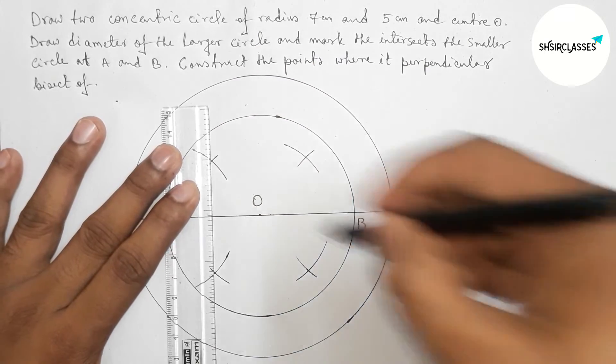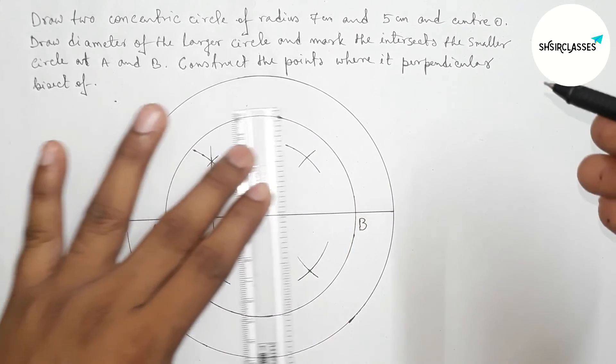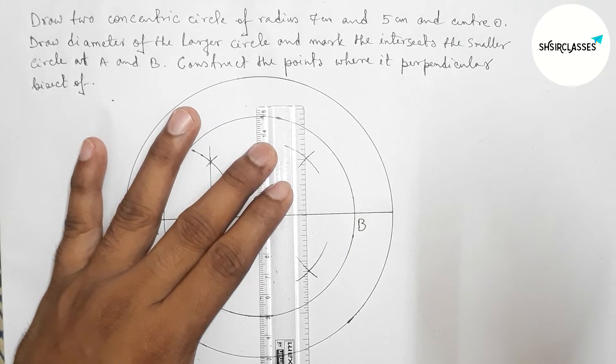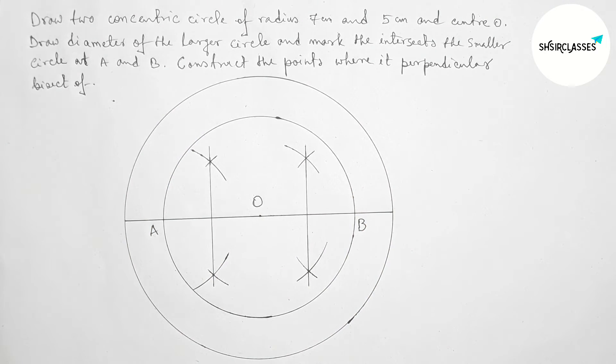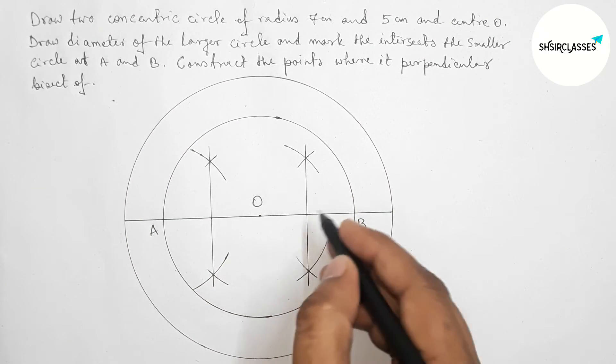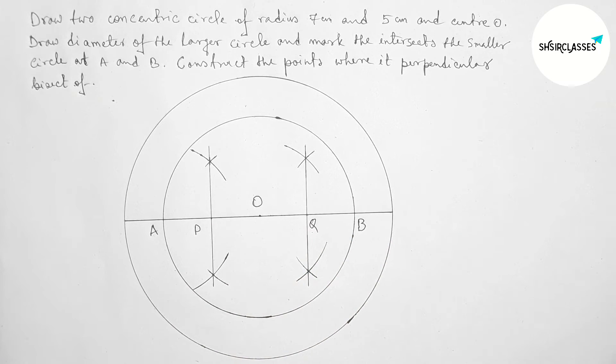Now joining this perpendicular, then joining this perpendicular. These both perpendiculars meet here at points P and Q. So here, P and Q are the points where the perpendicular bisectors meet. That's all, thanks for watching.